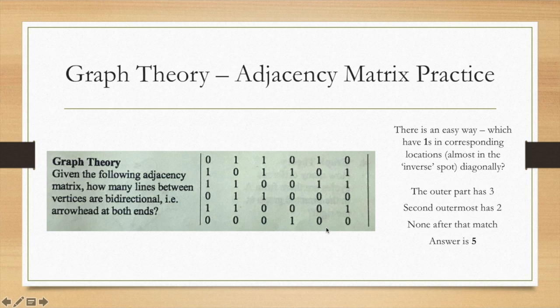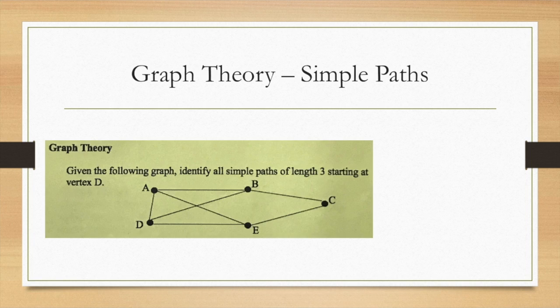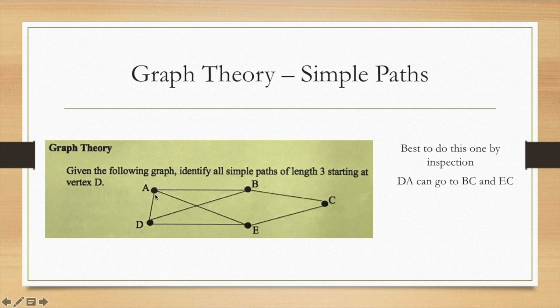For this one we're going to talk about simple paths in terms of graph theory. The simple paths of length three are not going to be repeating. If you start from d to a then you can go to b then c or d a e c. If you go from d to b then you can go to a e or from b to c e. As a note you can't go d b a d because that's not a simple path. D e can go a b or c b and those are the three places that d can go to. So our answer is six.